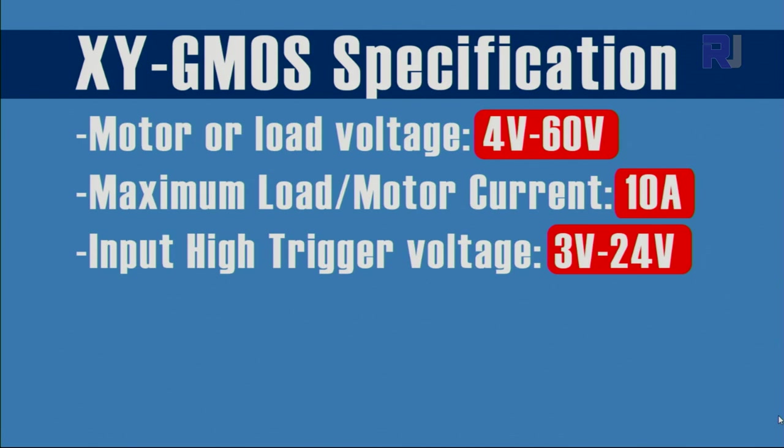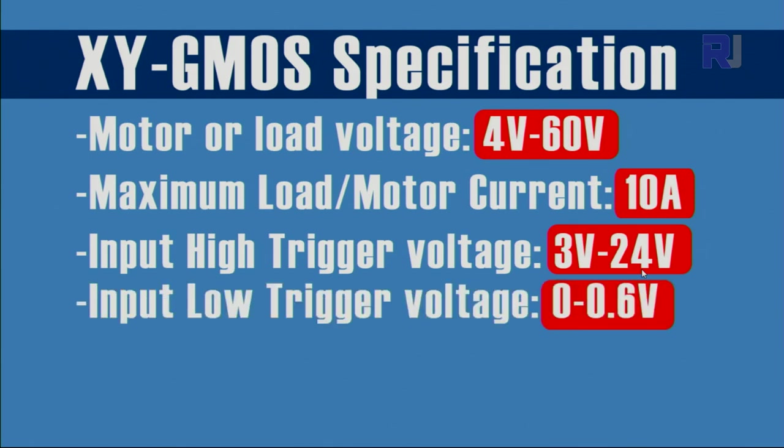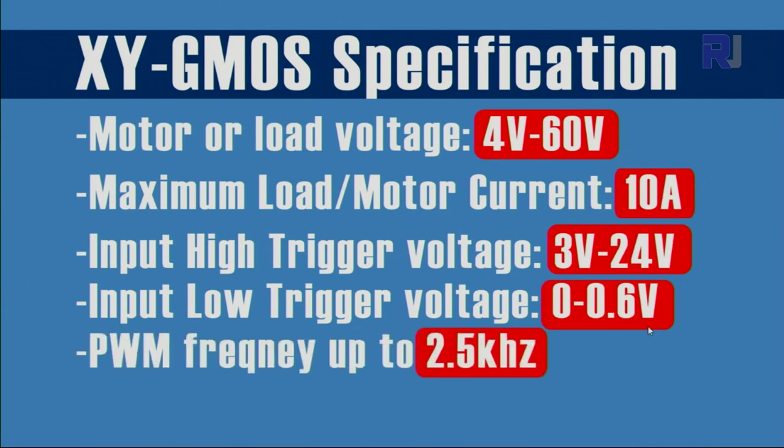For the high voltage trigger it can be triggered with 3 to 24 volts, and when you connect it with a low trigger it can be triggered with 0 to 0.6 volts.